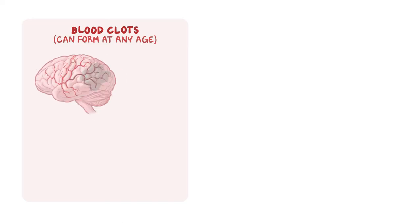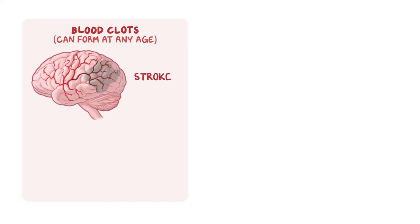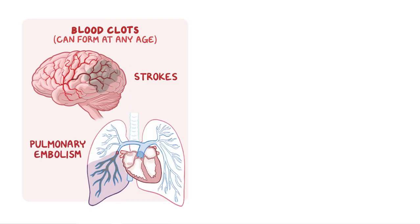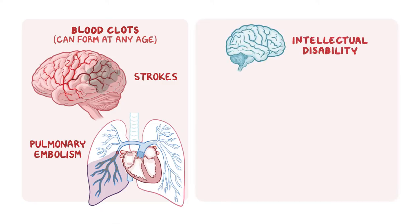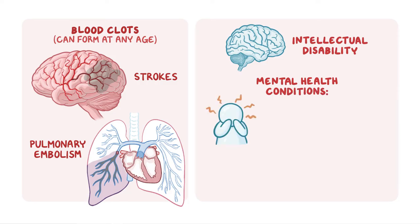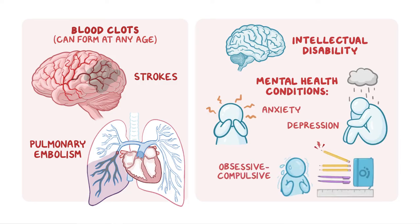Blood clots can also form at any age, causing the most serious complications of CBS deficiency depending on the location of the clot. These complications include strokes from clots in the brain and pulmonary embolism from blood clots in the lungs. Individuals with classical homocystinuria may also have intellectual disability or experience mental health conditions such as anxiety, depression, and obsessive-compulsive disorder.